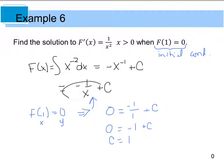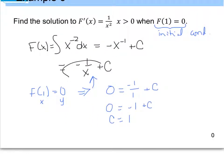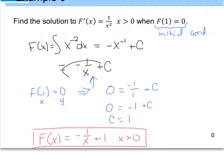So based upon that information, I can go back and solve a very specific solution and say that f of x is equal to negative 1 divided by x plus 1 when x is greater than 0. And this would be my specific solution using the initial condition that was given.